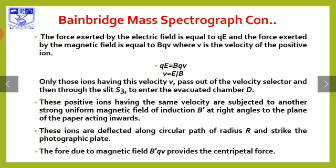These ions, all having the same velocity, are subjected to another strong uniform magnetic field of induction B' at right angles to the plane of the paper, acting inward. The ions pass through slit S3 into the evacuated chamber, where this strong magnetic field is applied at right angles.